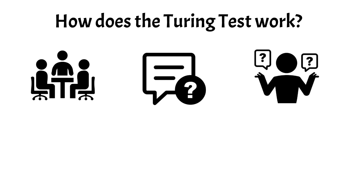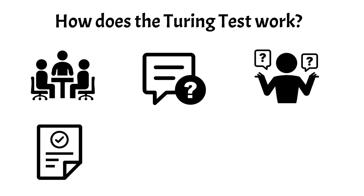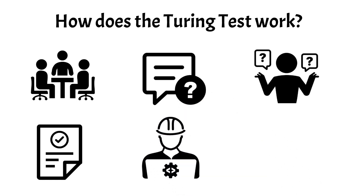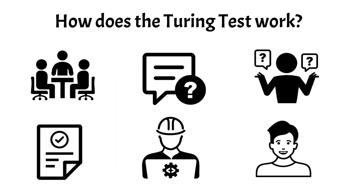If after a series of interactions the judge cannot reliably distinguish the machine from the human based on their responses, the machine is considered to have passed the test. This means the machine has successfully mimicked human-like thought processes and communication skills to a degree that it is indistinguishable from a human interlocutor. The Turing test challenges AI developers to go beyond simple programmed responses and create machines capable of more sophisticated, adaptable, and human-like interaction that can engage in meaningful and contextually appropriate dialogue with humans.